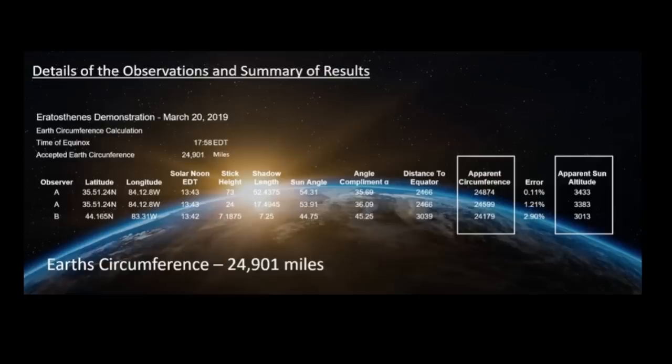I, up in Michigan, got 24,179. Harry, down in Tennessee, with a longer stick, got 24,874. That was less than a one-tenth of a percent error for his part, and less than three percent for me, and I used a seven-inch builder's square. The last column is the important one — apparent sun altitude — and that's where we do the triangles to find the elevation of the sun. We got three different numbers there, and they varied by over 400 miles on a local sun that would be 3,400 miles away.